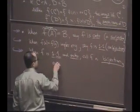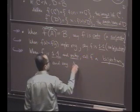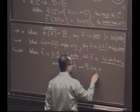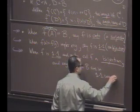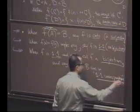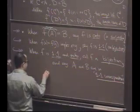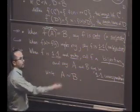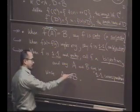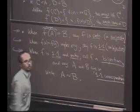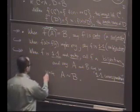So we call F a bijection, and in fact, we say that A and B are in one-to-one correspondence. This is a big term. One-to-one correspondence. We might also write A tilde B. It's not terribly standard notation, but in our context, in our book, we will shorthand A and B are in one-to-one correspondence by using a little tilde.